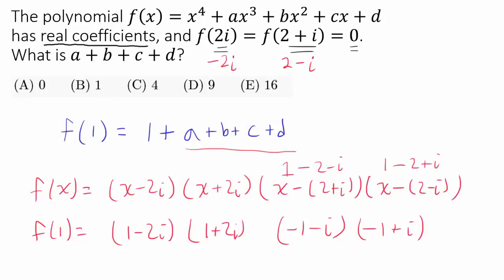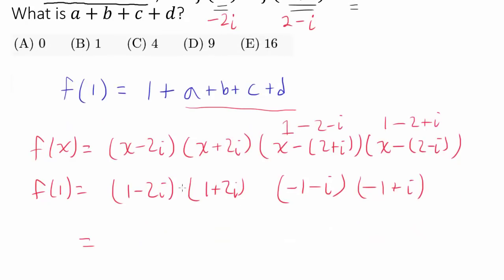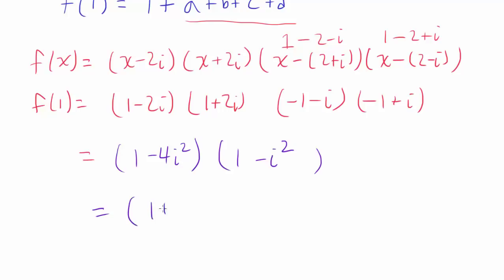Evaluating this is very easy. Multiplying these two, we get 1 times 1—it's difference of squares—so 1 squared minus 4 times i squared, and of course i squared is negative 1. Multiplying these two, we get negative 1 squared, which is 1, and we have minus i squared, which is of course going to be plus 1. We see that this is 1 plus 4 times 1 plus 1, because i squared is negative 1, and that's 5 times 2, or 10.